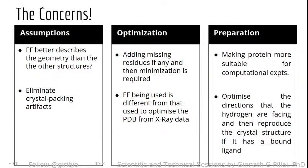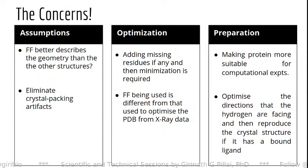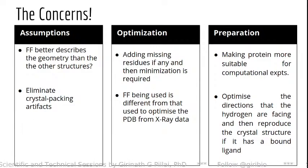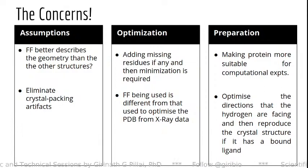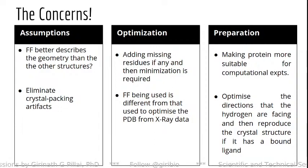What is protein preparation? It means making a protein more suitable for computational experiments, because we have to define certain parameters and add hydrogens. Adding hydrogens is not simply adding them — we have to understand the directions and orientations. You might think the software does this automatically, but this automatic process has a lot of issues. As human experts, we have to look into whether the software has done it properly or not.